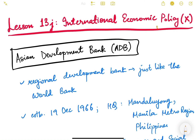Hello friends, let us continue international economic policy. This is the 10th video of this particular lesson. Till now we have studied about many international organizations like IMF, World Bank, WTO, etc., and different agreements in WTO. Today we are going to look at three important international organizations. The first one is the Asian Development Bank.